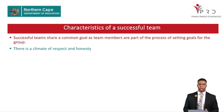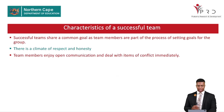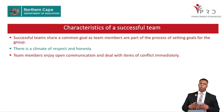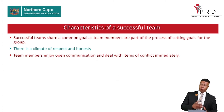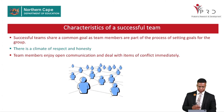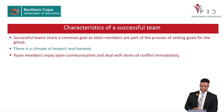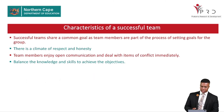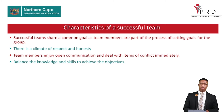Team members enjoy open communication and deal with items of conflict immediately, so that conflict is addressed quickly. When a member is not honest in communication it can lead to unresolved issues and team failure. A good team also balances the knowledge and skills of its members — you cannot have members who all have the same skill; you need members with different skills so that knowledge is balanced within the team.